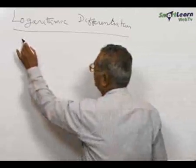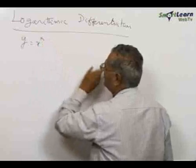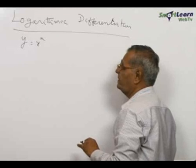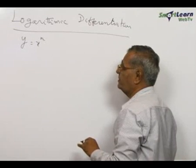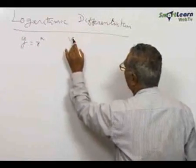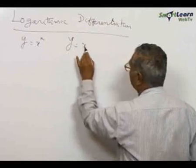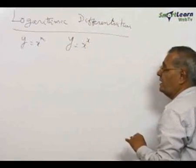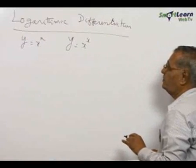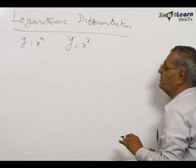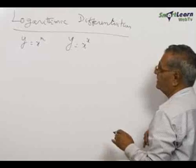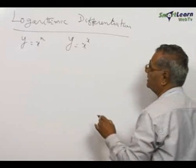If you have y equals x power n where n is a positive integer or a rational number, we already know that dy by dx is n x power n minus 1, where n is a constant. Suppose on the other hand if we have y equals x to the power of x, x is a variable. You cannot apply the rule that we have seen earlier to find out the derivative in this case. If you come across y equals x power x, especially when the exponent is a function of x, take logarithm and then apply the differentiation property.